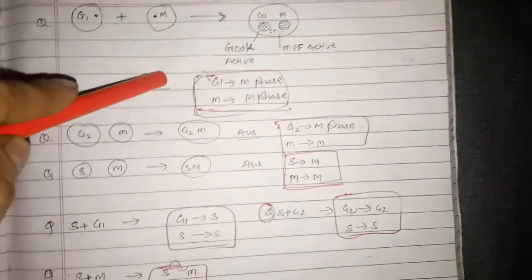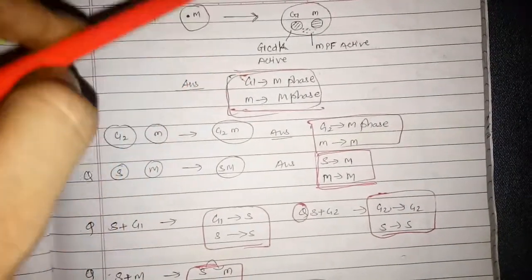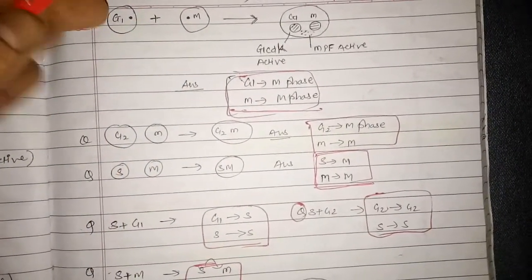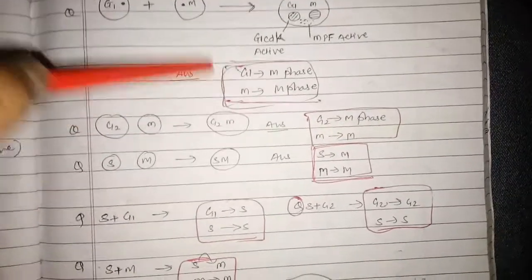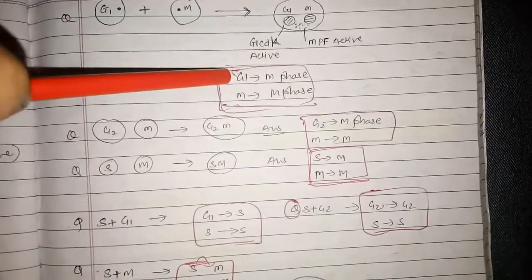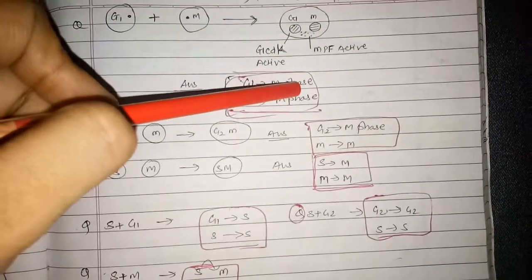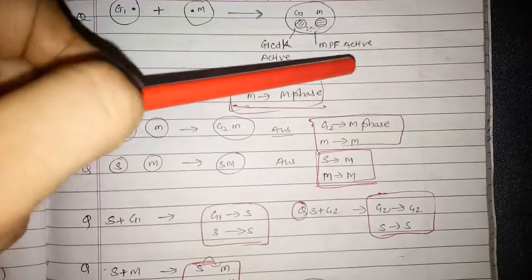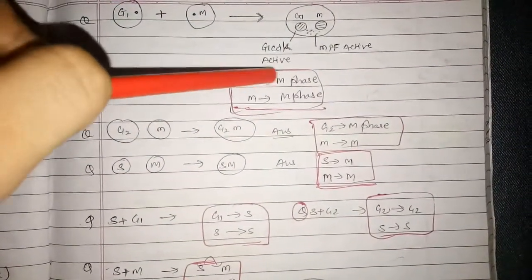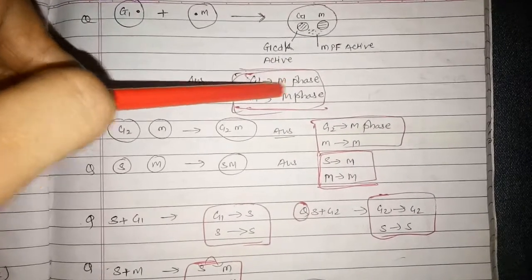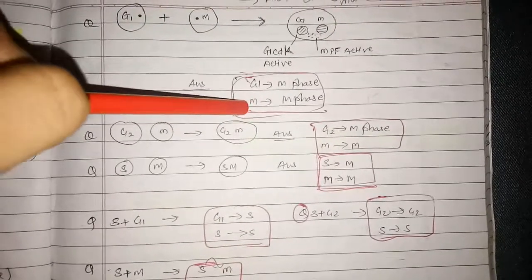when the cell in the G1 phase and the cell in the M phase are mixed together, or put together in the same environment, what will happen? The cell which is in the G1 phase will enter into the M phase. Because in the surrounding, the MPF — which is maturation or mitotic promoting factor — is already active. So the G1 cell stage will enter into the M phase, whereas the cell which is in the M phase will remain in the M phase itself.